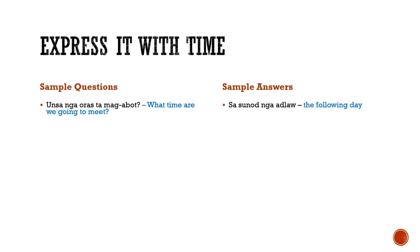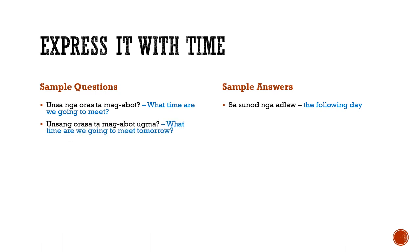'Sasunod nga adlaw' means the following day. 'Unsang oras ata mag-abot ugma' translates to: what time are we going to meet tomorrow? This phrase is similar to the first one — the only difference is the added word ugma, which means tomorrow. You can also say 'unsa nga oras ta mag-abot ugma' and it will still translate to what time are we going to meet tomorrow.